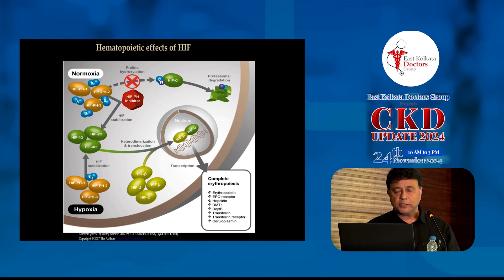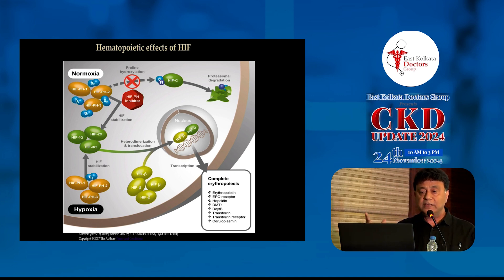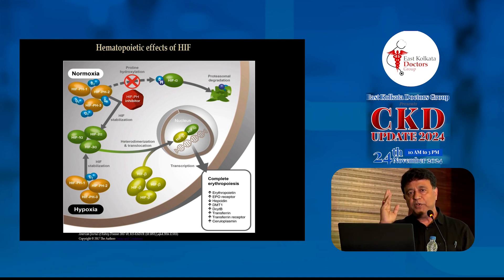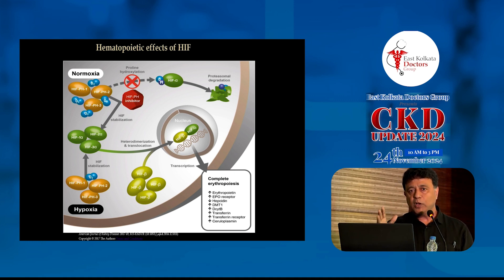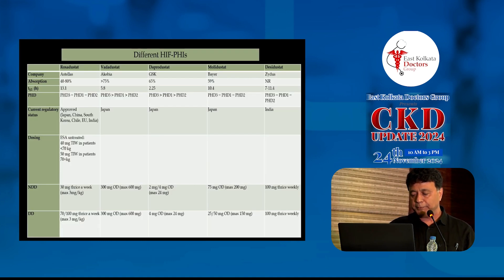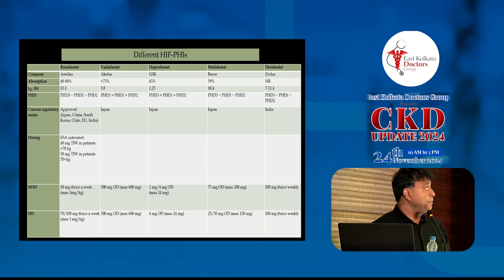In normoxia, HIF prolyl hydroxylase is the enzyme that destroys HIF-alpha. If you can prevent that HIF prolyl hydroxylase, you can create a pseudo-hypoxia - mimicking hypoxia by inhibiting HIF prolyl hydroxylase - and thereby stimulate the whole HIF pathway. This is the mechanism behind HIF prolyl hydroxylase inhibitors (HIF-PHIs).